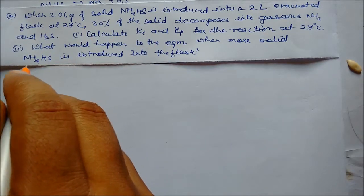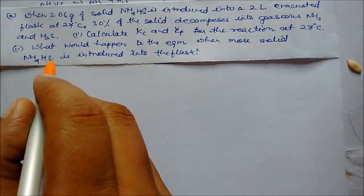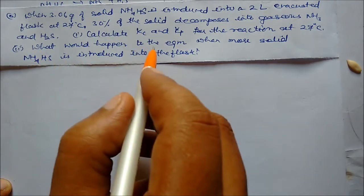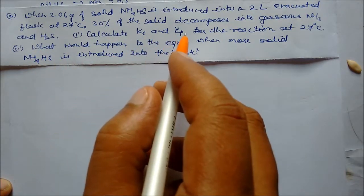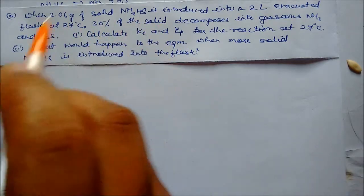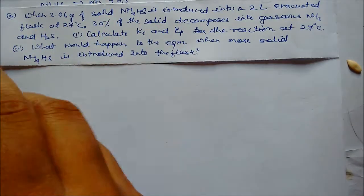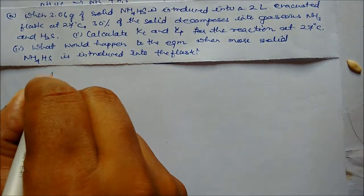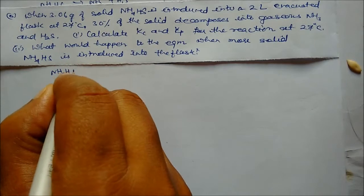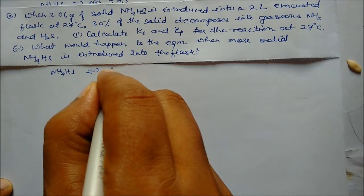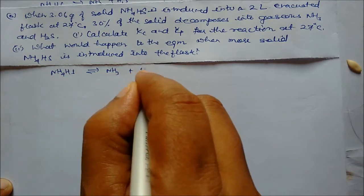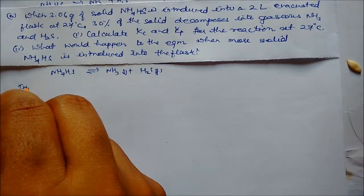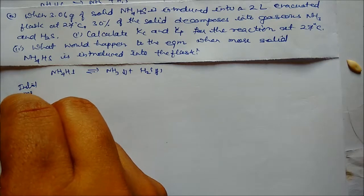Pure solid does not appear in Kp or Kc expressions, so adding more solid has no effect. The reaction is: NH4HS (solid) converts into NH3 (gas) plus H2S (gas). We need to find initial moles: 3.06 grams divided by the molar mass of ammonium hydrosulfide, which is 51 g/mol.